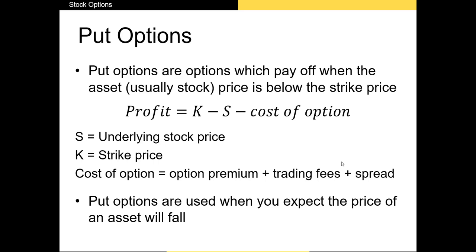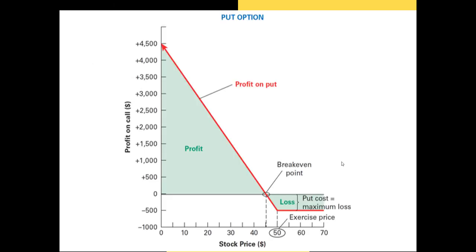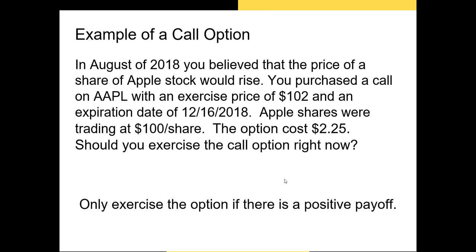You profit from put options when the underlying asset value falls significantly below the strike price. Just like a call option, as soon as you buy a put option you pay a premium. In this case, our strike price is $50. If the stock price falls to $20, you're selling shares of $20 stock for $50, so your payoff is $30 per share. Your profit is that $30 per share minus any premium that you paid.